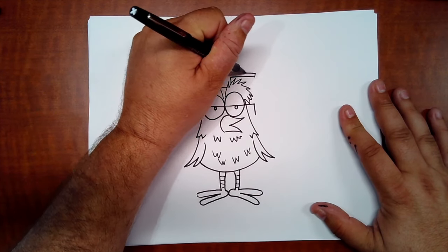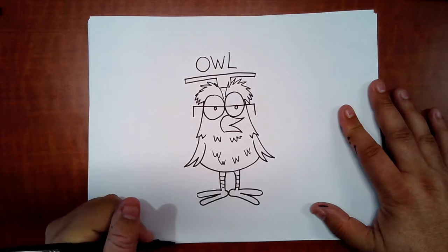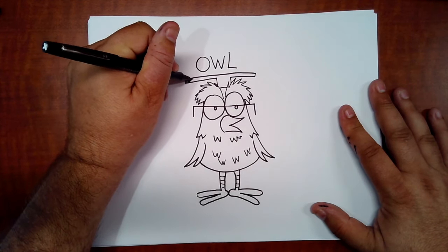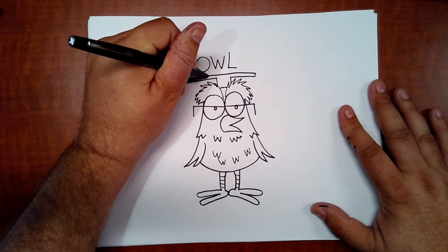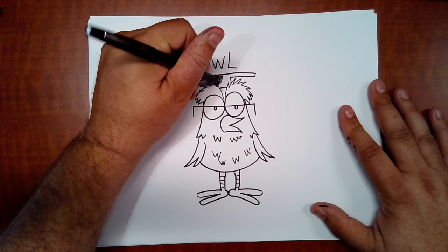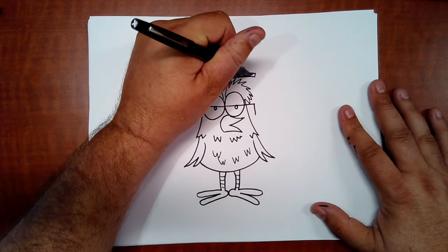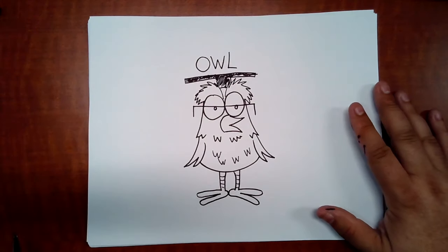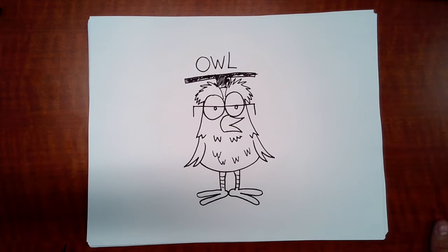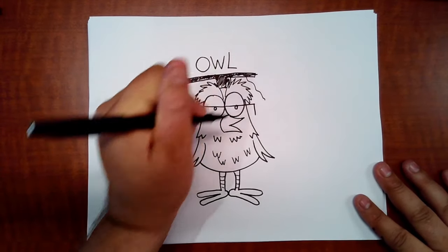Then you shade that in a bit—not shaded in all the way, just enough to color it in a little. And then you've got a squiggly line down.